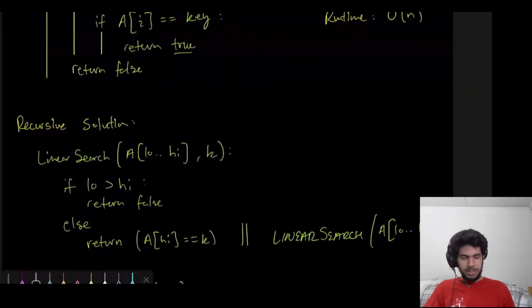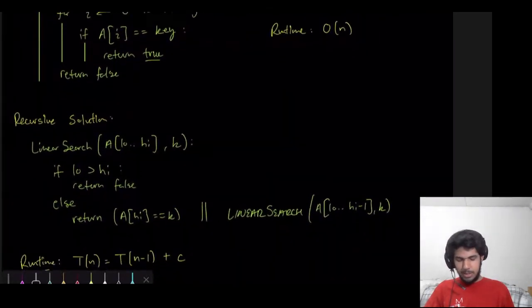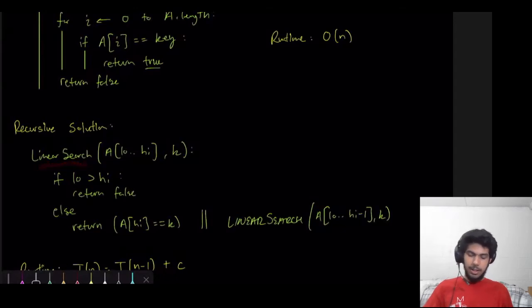Now there's also a recursive solution for this, which is what we're going to explore now. So linear search again takes an array and a key. So for now, we'll label the starting and end points of the array as low and high, which are the indices of the array. So this is the starting index, that's the upper index. So note that low won't always be 0 and high won't always be N minus 1. These are indices of our original array. So we're sort of taking a subset of our array, if you will.